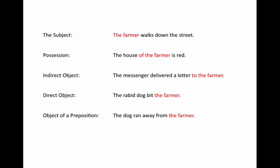It can be used as the indirect object: the messenger delivered a letter to the farmer — he's receiving the letter, which is the direct object. It can be used as the direct object itself: the rabid dog bit the farmer. Note that in this case the farmer is receiving the action of the verb. And it can be the object of a preposition: the dog ran away from the farmer, where the farmer is the object of the preposition 'from.'